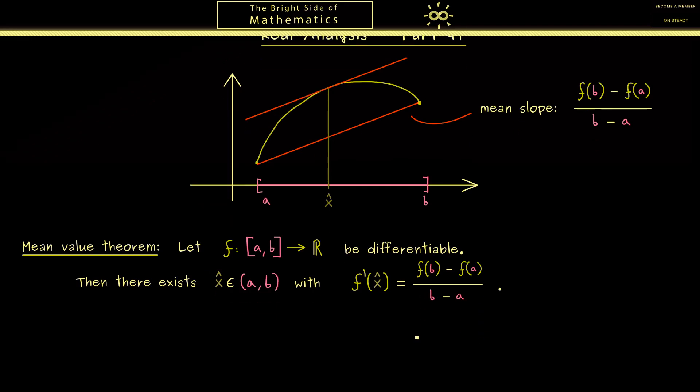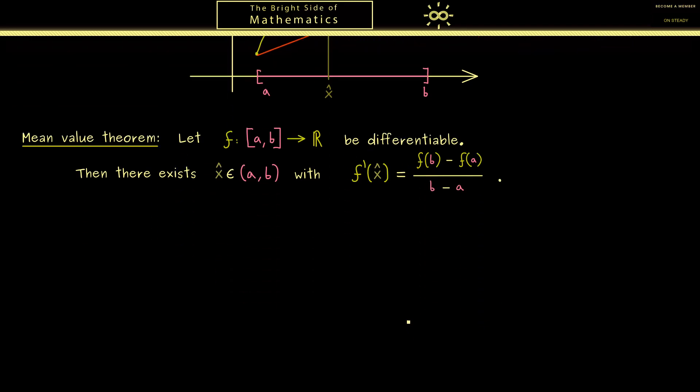Then let's use the next minutes to prove the mean value theorem. We will need Rolle's theorem from the last video. Indeed we can immediately apply it in the case that f(a) is equal to f(b). Because in this case Rolle's theorem tells us there is an x hat in the open interval (a,b) such that the derivative at this point is exactly 0. However 0 is in this case the mean slope. Hence in this case we have already proven the mean value theorem. Therefore the idea for the proof would be to reformulate the general case such that we can use this special case here.